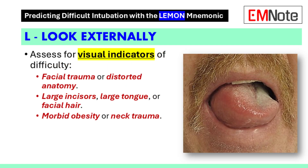Step 1: Look externally. The first component involves looking at the patient's external features. Providers should assess for signs such as morbid obesity, facial hair, protruding teeth, a protruding tongue, or any trauma to the face and neck. These factors can complicate the intubation process and should be noted carefully.